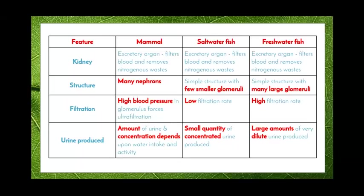A table summarises the different features between mammal, saltwater fish and freshwater fish kidneys. The mammalian kidney has many nephrons, whereas saltwater and freshwater fish have quite simple nephron structures. Saltwater fish have few smaller glomeruli, while freshwater fish have many large glomeruli. Mammals and freshwater fish both have a high filtration rate to get rid of as much water as possible, while saltwater fish have a low filtration rate. The amount of urine produced also differs between the three types depending on their environments.